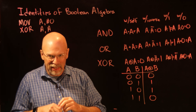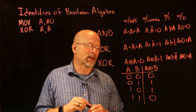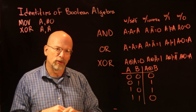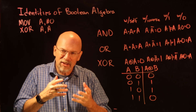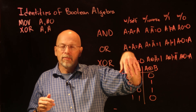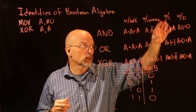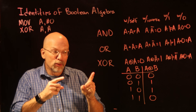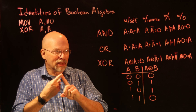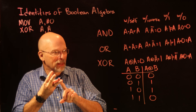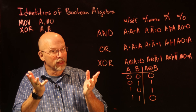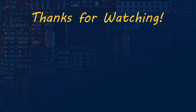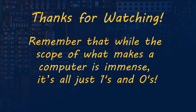Later we'll use this when we do bitwise operations, which allow us to manipulate numbers at the bit level. When we get to simplification of boolean expressions, this identities table is going to really help us. Things like something combined with itself, with its inverse, or with a constant will appear as red flags in our expressions, making boolean algebraic simplification a lot easier than mathematical algebraic simplification.